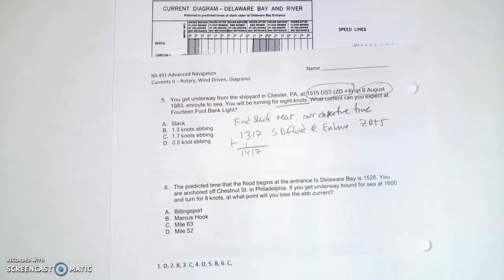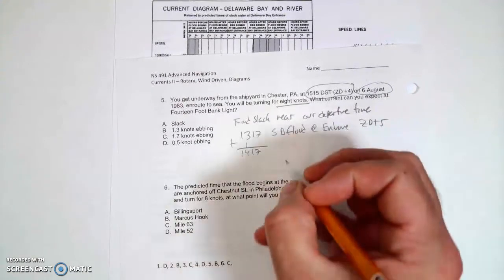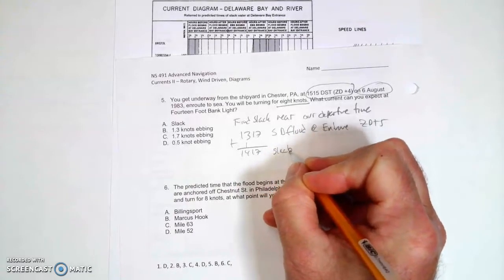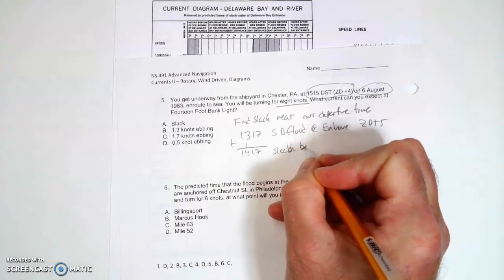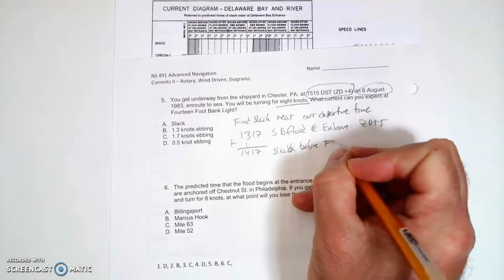So now 1417 is the slack before the flood. So I'll write that down, slack before flood.